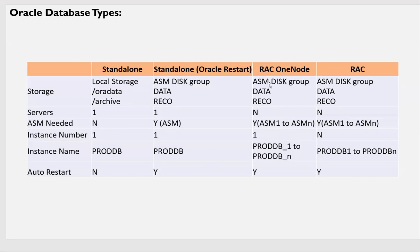RAC One Node: storage is ASM disk groups. You can have N number of servers — three node, four node, five node rack with no limit. ASM is needed on all nodes. However, only one database instance will be running at any given time — it may be running on server one, two, three, or four. If the database name is proddb, the instance name will be proddb_1, proddb_2, proddb_3, or proddb_4, depending on which node it's running. Only one instance runs at any given time, and auto restart is supported.